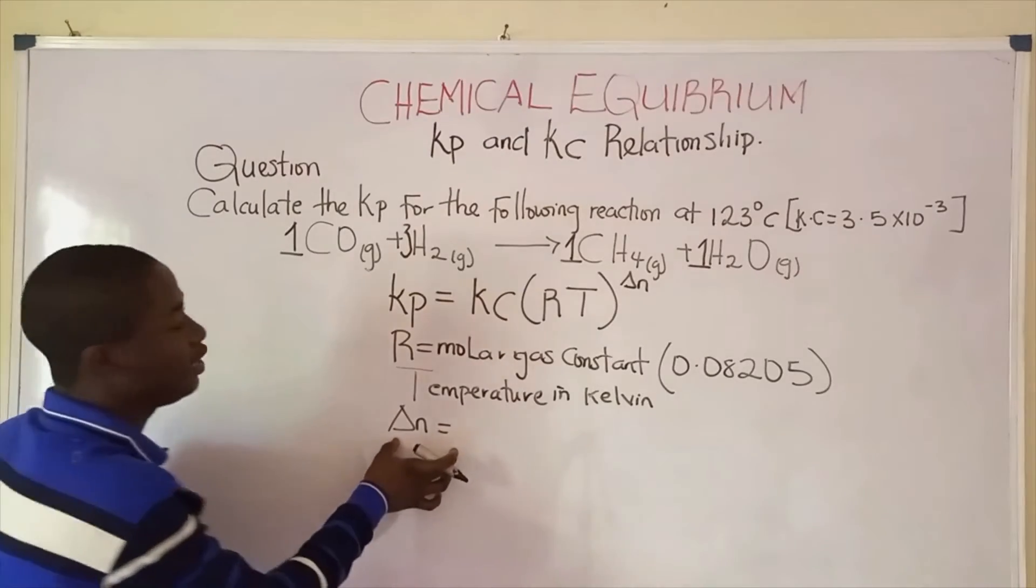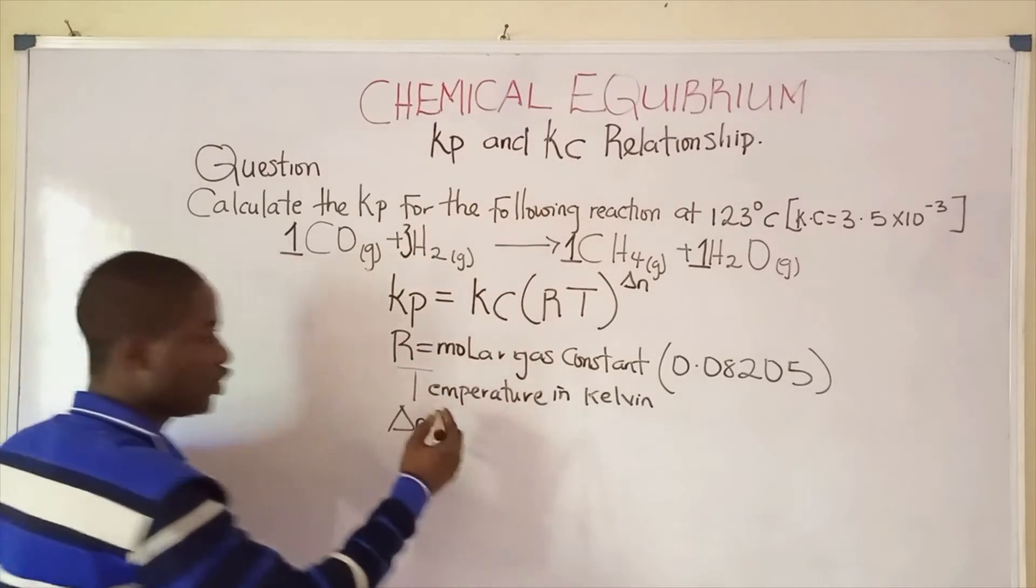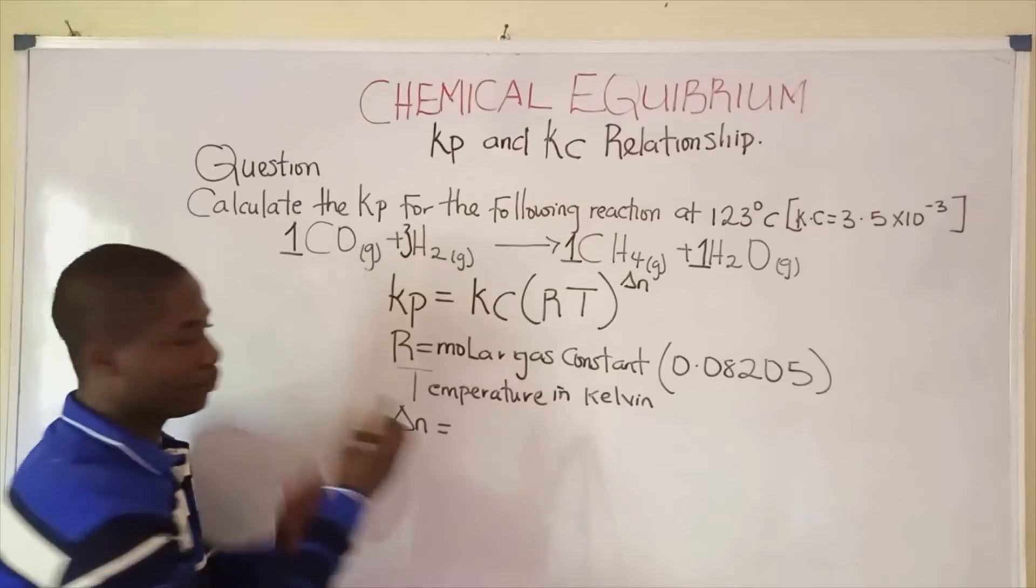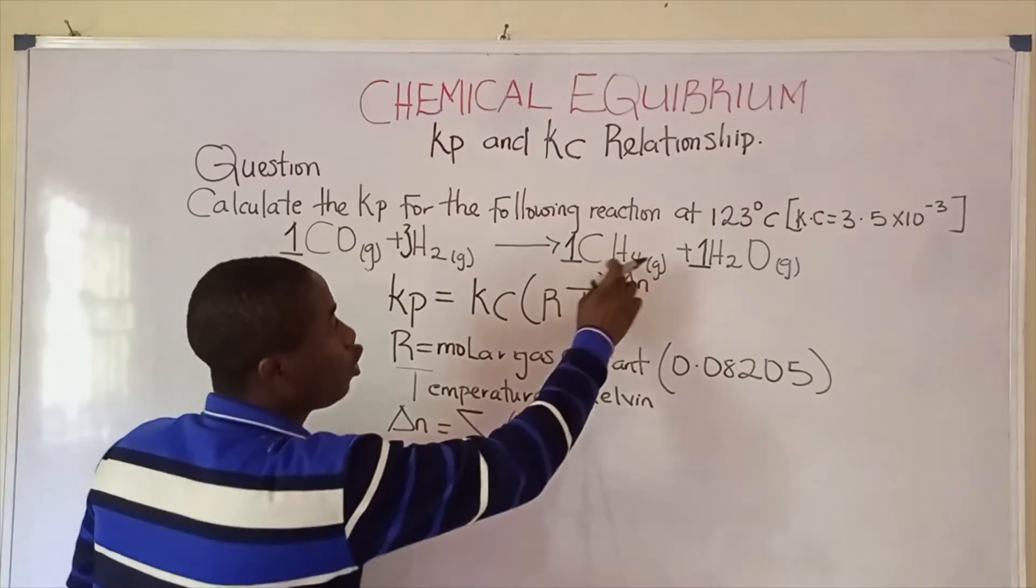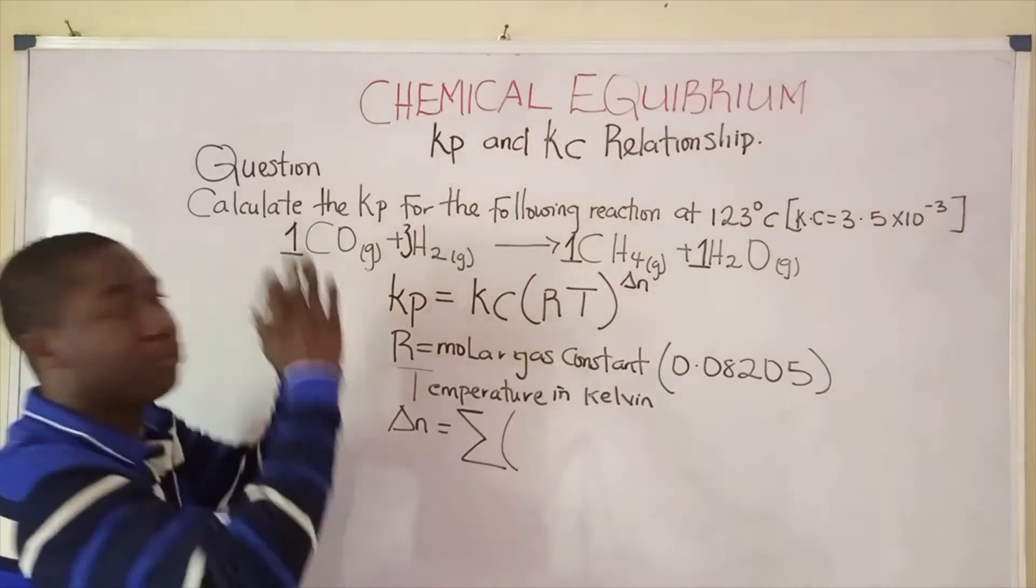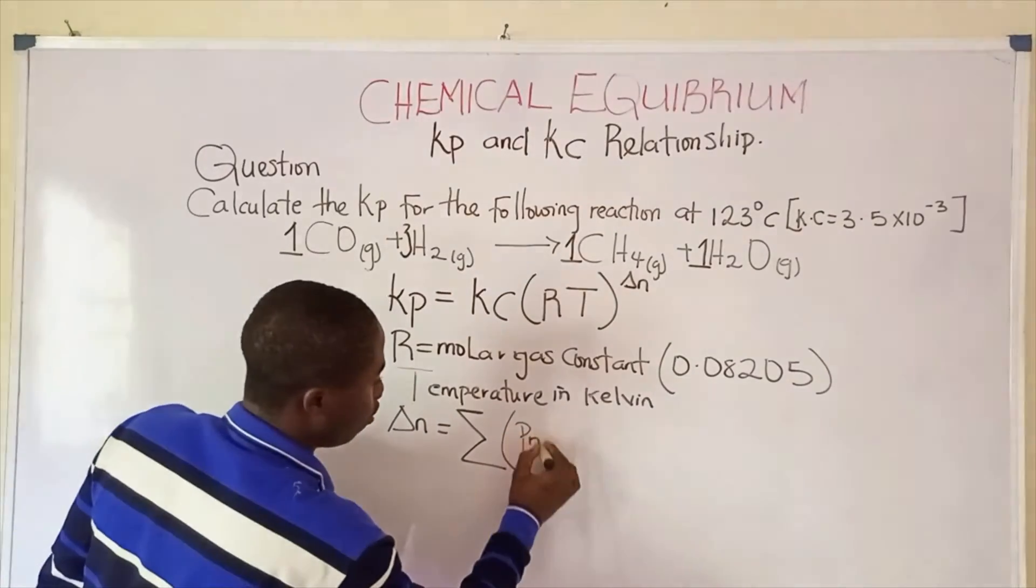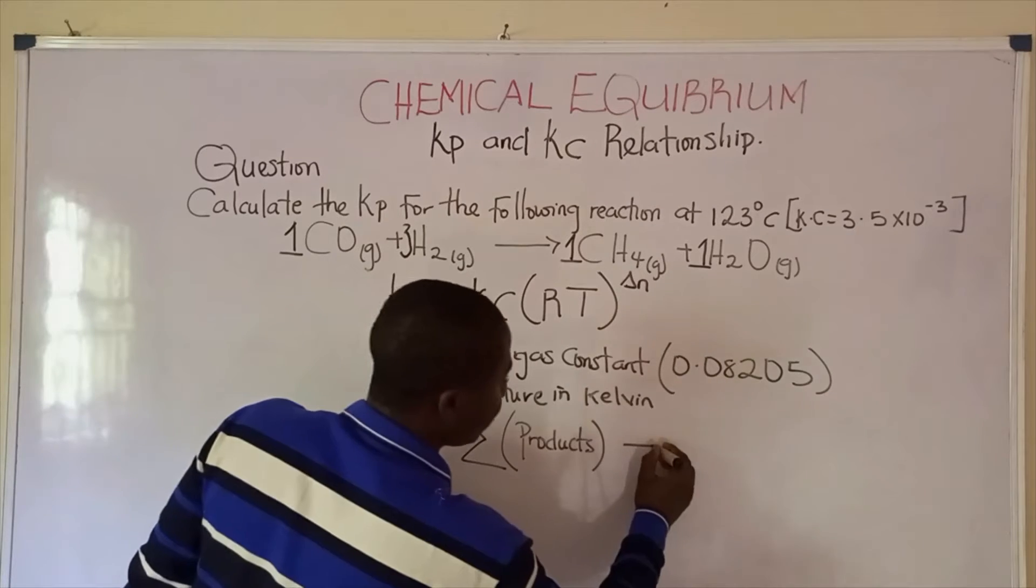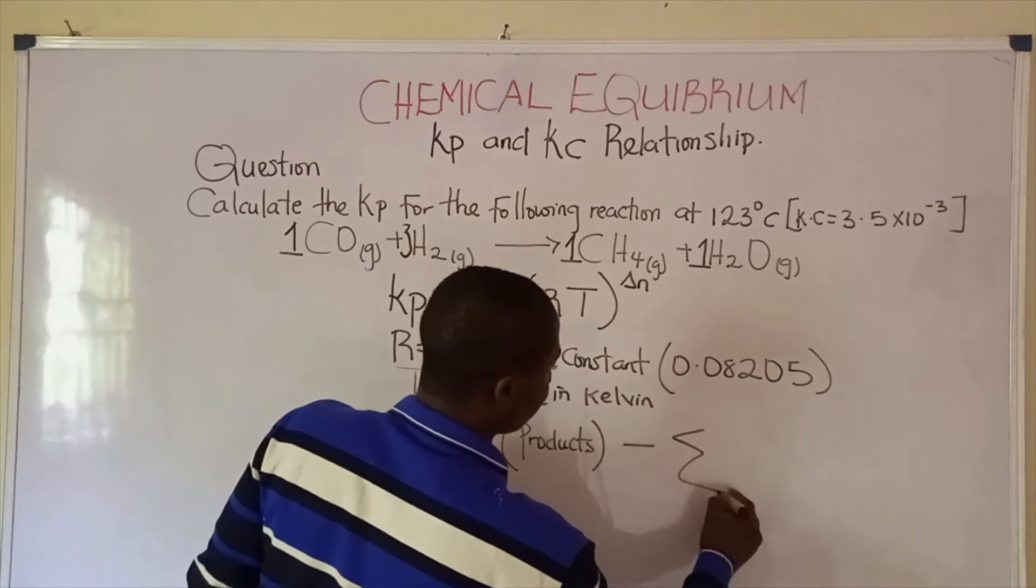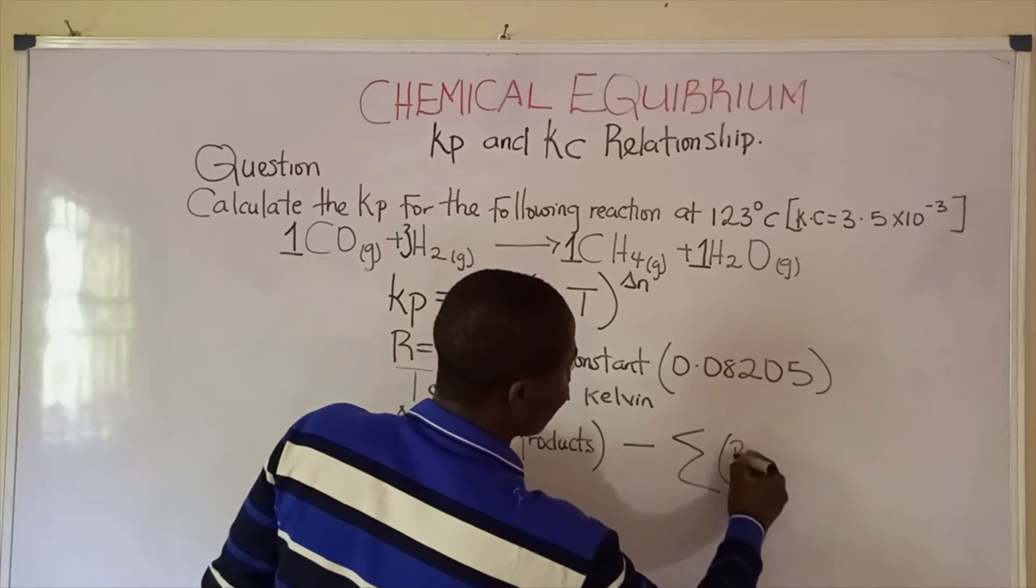To get the change in number of moles of the reactant species, it is the sum of the number of moles of the products minus the sum of the number of moles of the reactants.